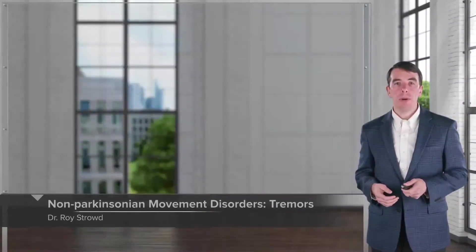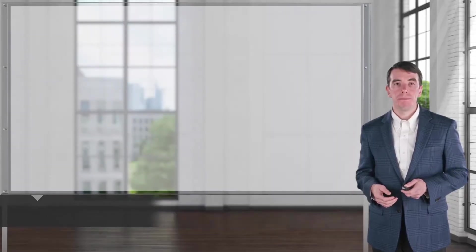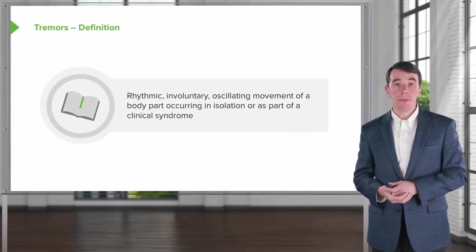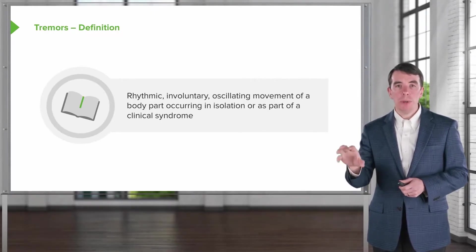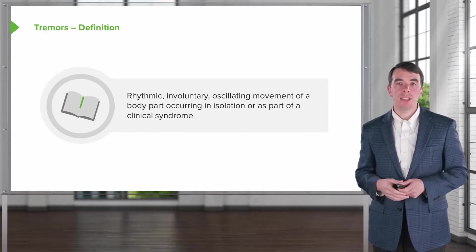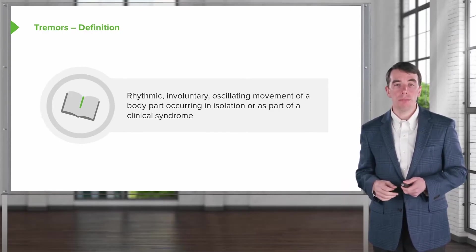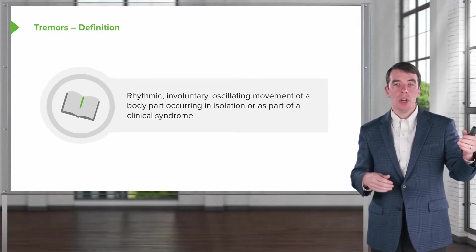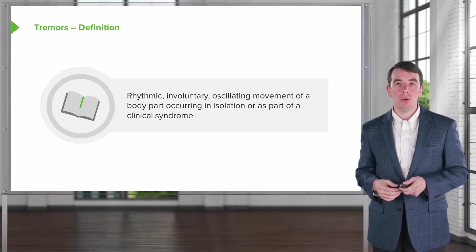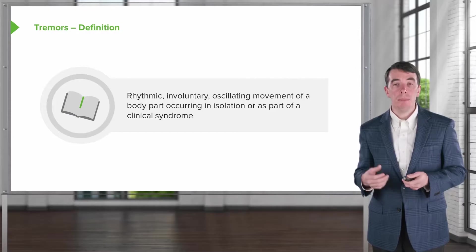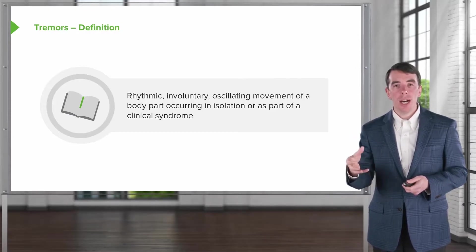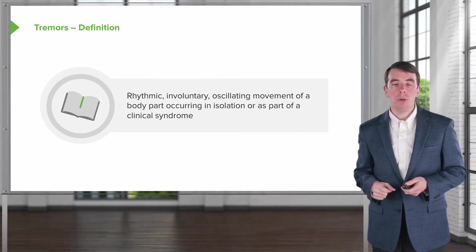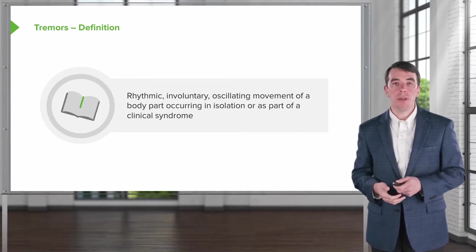In this talk, let's review non-Parkinsonian movement disorders. Let's begin with tremor. Tremor is a rhythmic, involuntary, oscillating movement of a body part occurring in isolation or as part of a clinical syndrome. We can see isolated tremors or tremor that means something else is going on — some other syndrome is causing it. Importantly, tremors should always be rhythmic and oscillate about a limb or joint, resulting in movement of the body part.